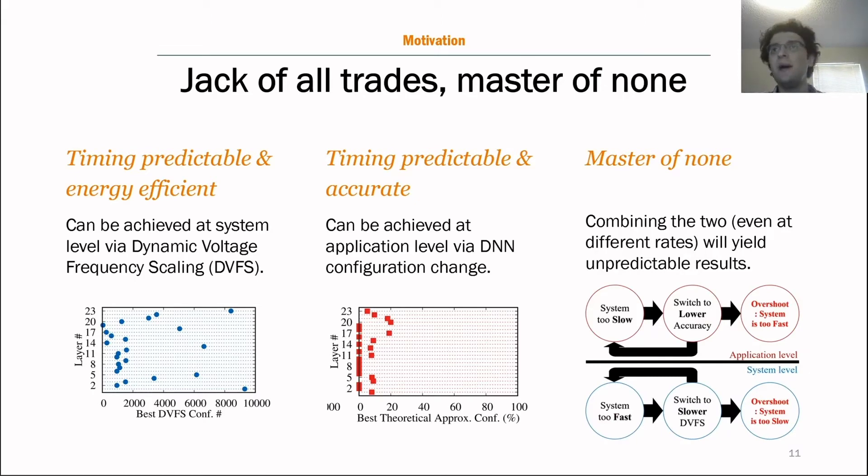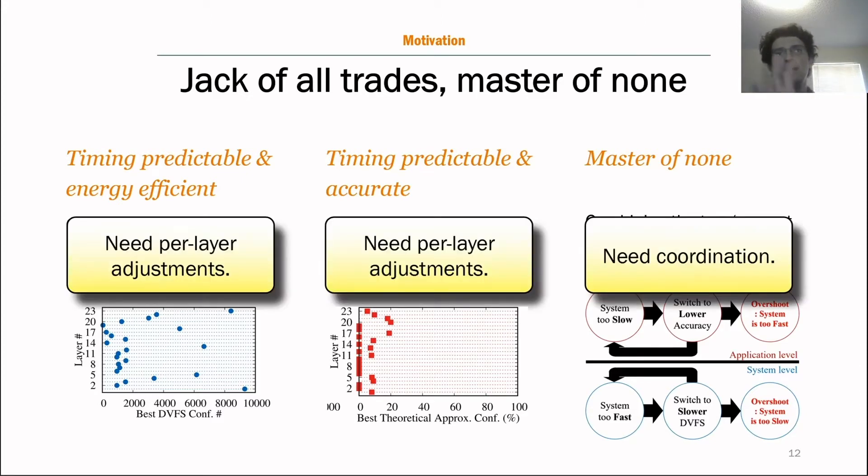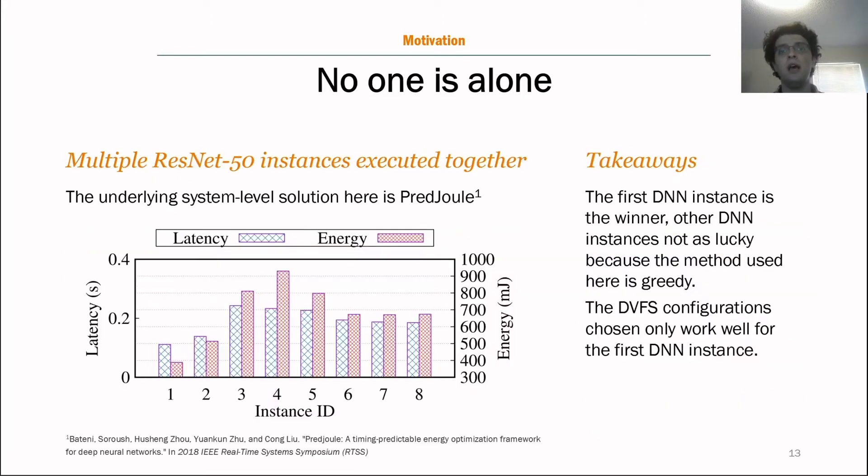And here's what happens. Basically, we have a negative feedback loop. Even if you're running your system level solution and application level solution at different frequencies, you still potentially get this negative feedback loop, which both of them try to save the system from missing a deadline, both of them overshoot and then try to correct their mistake. And then you get this negative feedback loop forever. So for these motivations, as we discussed, we need per layer adjustments and we need coordination.